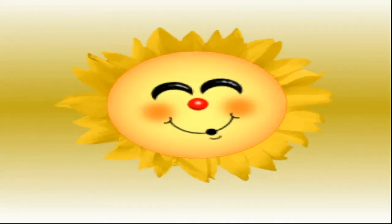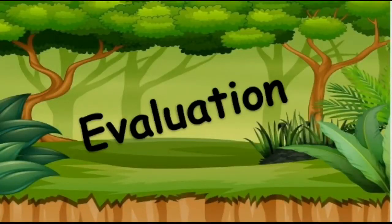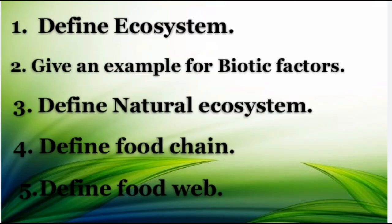Now we have come to the end of the session. Maintain a separate notebook for science, and if you have any doubts, make a note of them. It's time for questions — go through the lesson and answer these: First, define ecosystem. Second, give an example for biotic factors. Third, define natural ecosystem. Fourth, define food chain. Fifth, define food web.